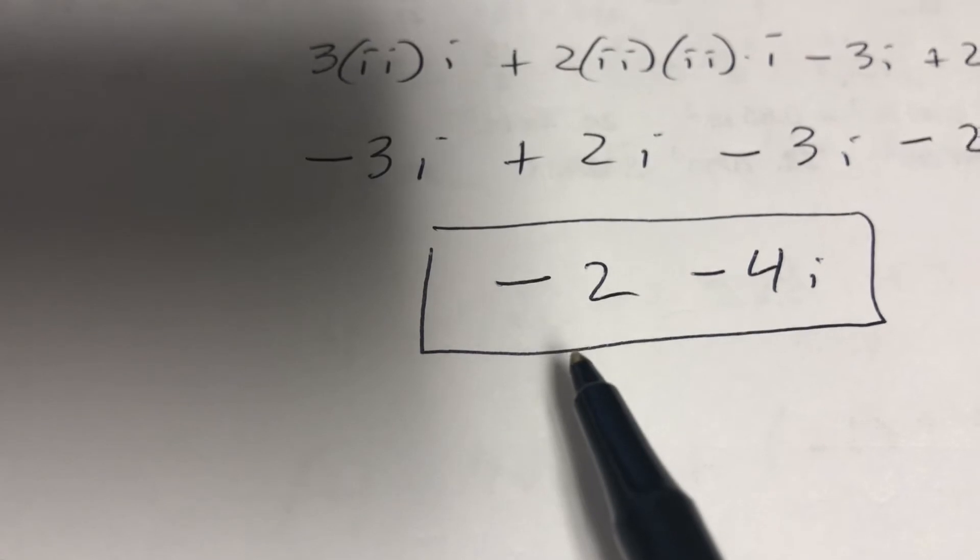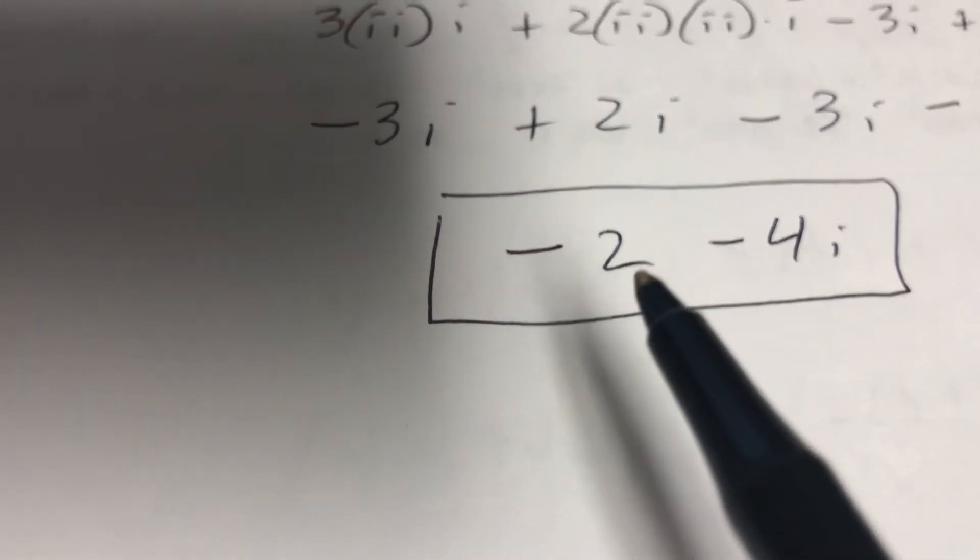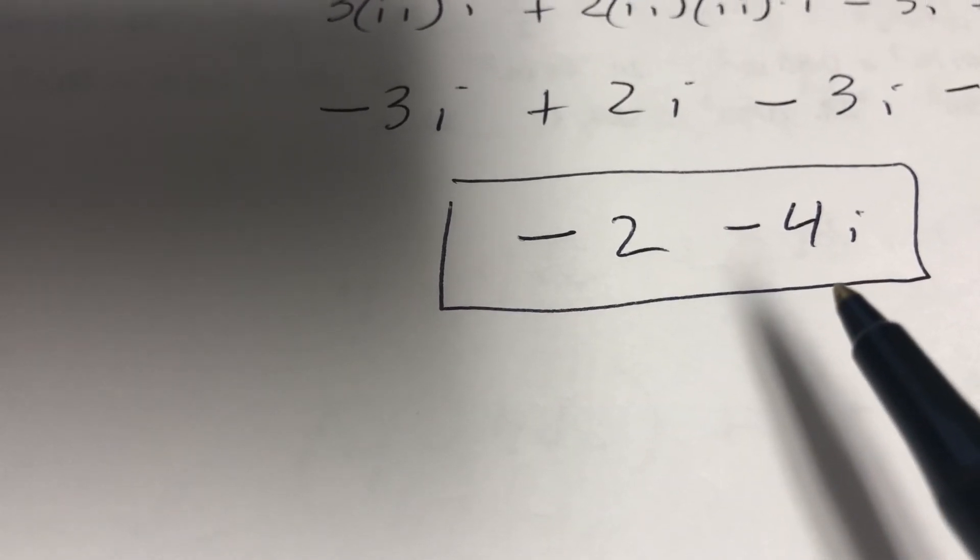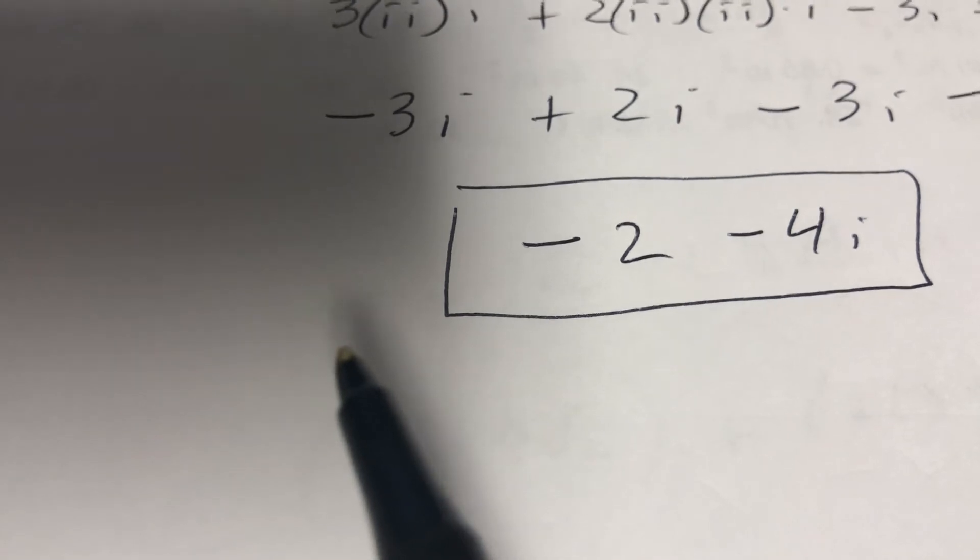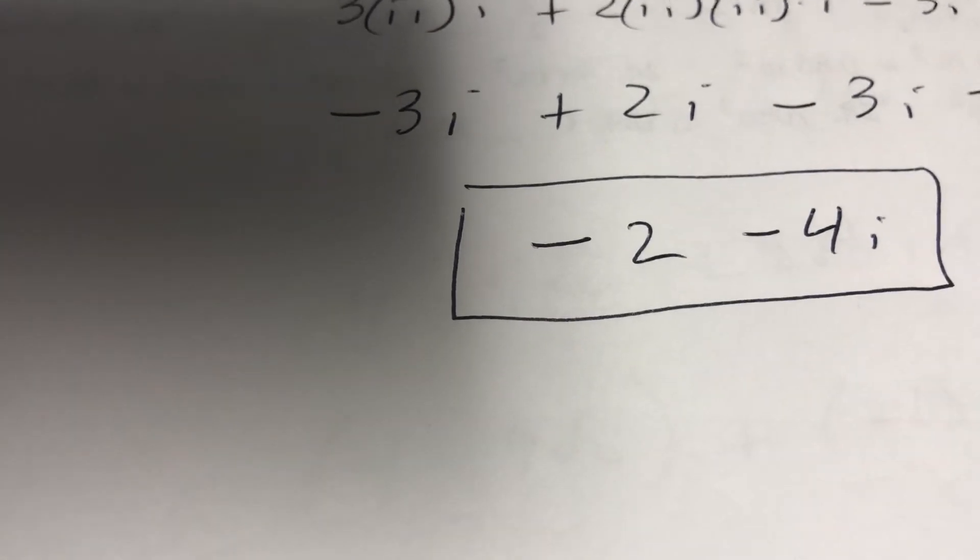So minus 2, and then you can add all those and you get negative 4i. Remember, put the real part first, the imaginary part second. It's like putting your fork on your left and the spoon and knife on the right when you eat dinner - it's the proper way to do it.